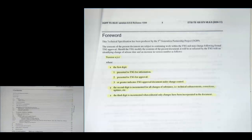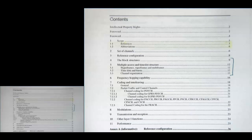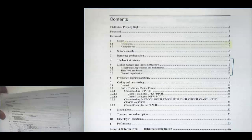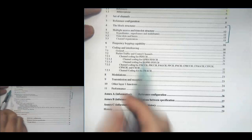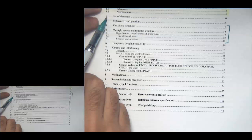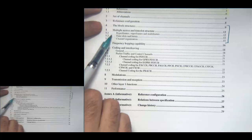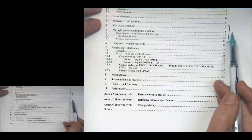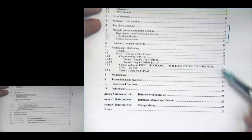Looking at the scope and table of contents: there's the forward, and sections covering the set of channels, block structure, and multiple access and time slot structure. The things to carefully read are pages 9 through 15. There's also a lot of information about coding and interleaving that you'd be somewhat familiar with but don't need to know in detail.